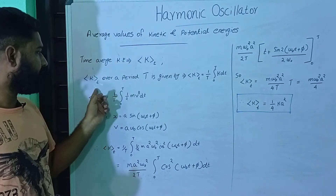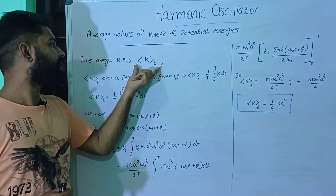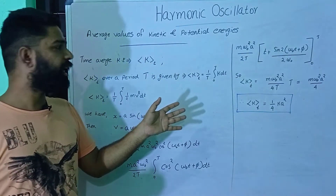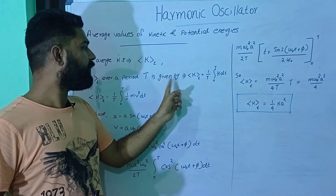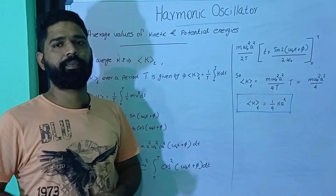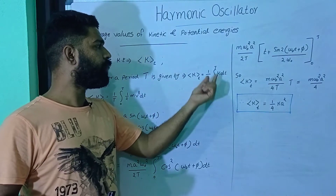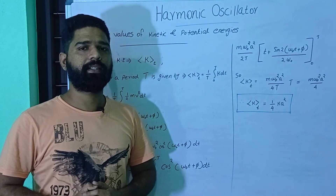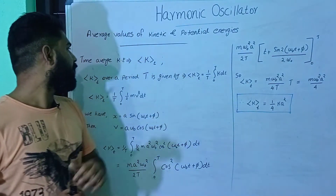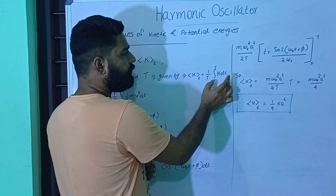Time average kinetic energy over a period T is given by: K̄ = (1/T) ∫₀ᵀ K dt. Here we have the time variable, and the time period is given by that limit, so we consider 0 to T. Total kinetic energy divided by time period gives the time average kinetic energy.